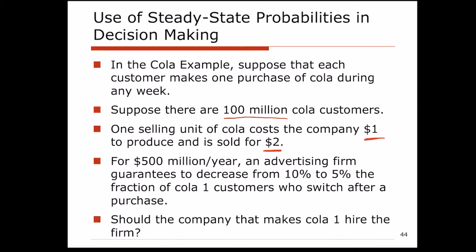For $500 million a year, an advertising company can produce ads that will decrease the number of people who are cola 1 drinkers switching to cola 2 in their next purchase — from 10% down to 5%. The question is: should the company that produces cola 1 go ahead and pay for this ad?